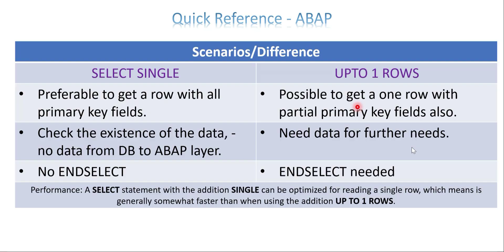Now let's look at the scenarios and differences for your better understanding. SELECT SINGLE is preferable to get a row with all primary key fields. You can use partial keys, but for maximum performance use all primary keys. UP TO ONE ROWS is possible to get one row with partial primary key fields. If you don't have values for all the primary keys, use UP TO ONE ROWS. Also, SELECT SINGLE is used to check the existence of data in your database — it is not for transferring data from the database layer to the application layer.